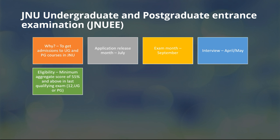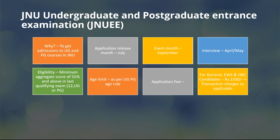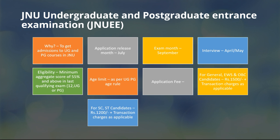Eligibility requires a minimum aggregate score of 55% and above in your last qualifying exam — that can be Class 12 (Plus Two) for UG courses, and 55% in your undergraduate degree for PG courses. Age limit is as per UG age limit rules. Application fees for General, EWS, and OBC categories is 1500 rupees plus transaction charges. For SC/ST candidates it is 1200 rupees plus transaction charges — only a 300 rupees difference. For PWD candidates, the application fee is nil.